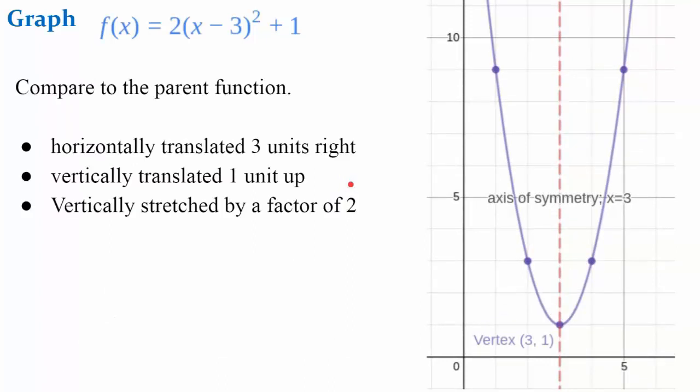Let's compare this to the parent function. It is horizontally translated three units to the right, vertically translated one unit up, and vertically stretched by a factor of two. So you can see that when it's in vertex form, it's visually easy to identify the transformation of the function.